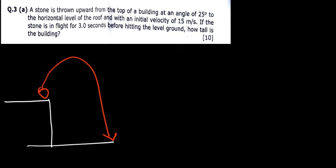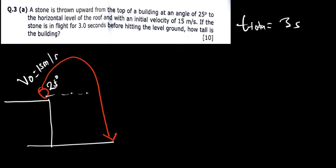We have been told the initial velocity is 15 m/s and the angle is 25 degrees. The total time is 3 seconds. The question asks how tall the building is — that means we are finding capital H, the height from ground level to the top of the building. H_max equals capital H plus small h, so once we find H_max and small h, we subtract to get H.